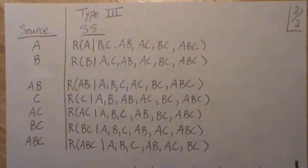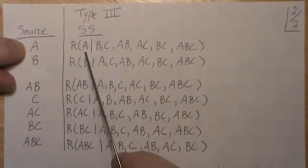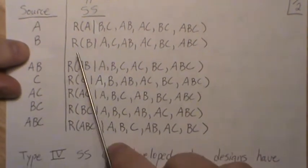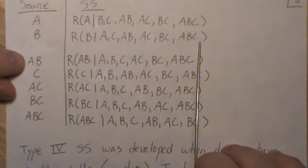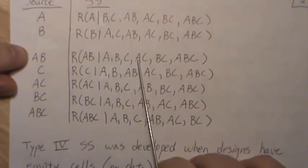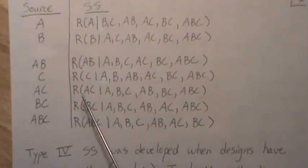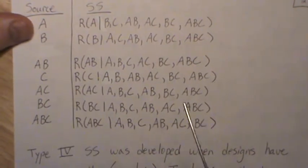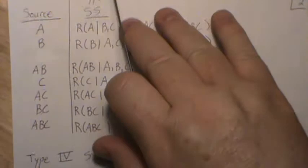Type 3 sums of squares is actually a little simpler but can be a little bit dangerous when interpreting them. For A, it's the reduction in the sum of squared error when A is removed from the model given that every other term is in the model. The same applies to B, to the AB interaction, and so on — each term is evaluated given every other term. The danger is that when one of the interaction terms is significant, the type 3 sums of squares for A, B, or C really don't make sense. We'll cover that in much more detail in later mini-series.